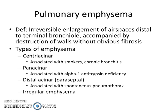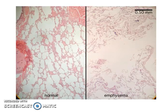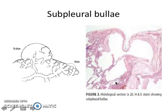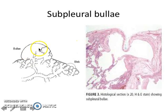Next is pulmonary emphysema, defined as irreversible enlargement of airspaces distal to the terminal bronchiole, accompanied by destruction of walls without obvious fibrosis. There are four types: centriacinar, panacinar, distal acinar or paraseptal, and irregular emphysema. Microscopically, there is enlargement of airspaces compared to normal and fragmented alveolar spaces. Emphysema can also cause subpleural bullae, especially in paraseptal emphysema, which can give rise to spontaneous pneumothorax when ruptured.